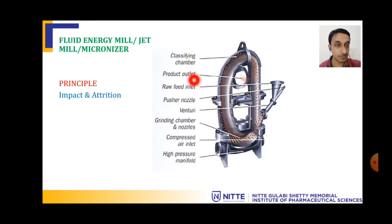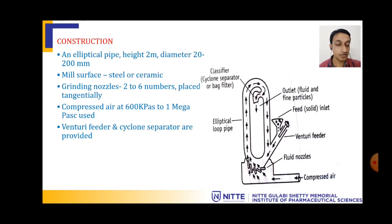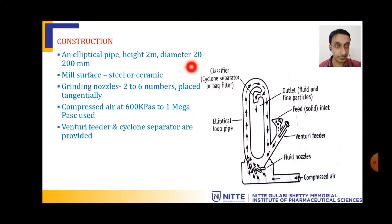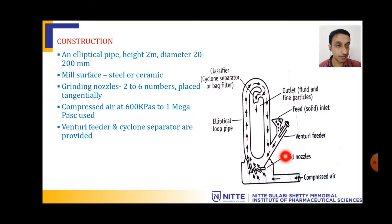Let us look at a classical textbook diagram for explanation. This fluid energy mill has an elliptical tube, with a height of 2 meters and a diameter of 20 to 200 millimeters, so it can vary in size. The mill surface is made of steel or ceramics, and there are 2 to 6 grinding nozzles located at the bottom.